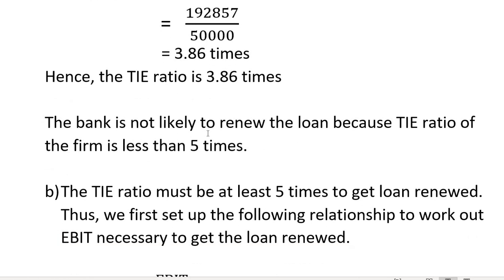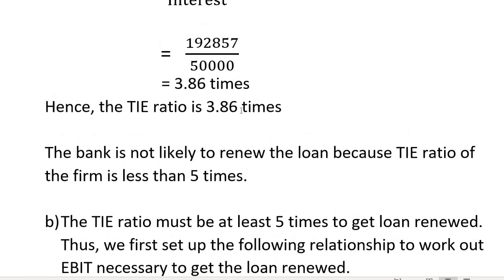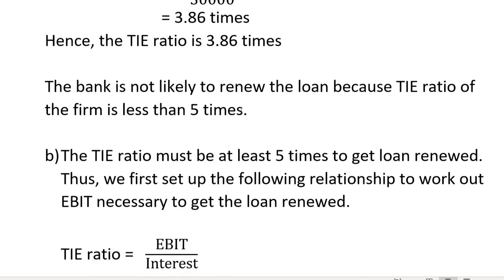The bank is not likely to renew the loan because the TIE ratio of the firm is less than 5. The firm's current TIE ratio falls below the required minimum of 5 times.